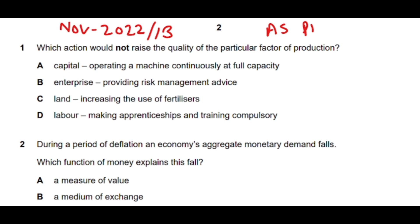Starting with question number one: which action would not raise the quality of a particular factor of production? The examiner generally bolds the word 'not', but students often ignore this, so keep it in mind. Option A is the correct answer.